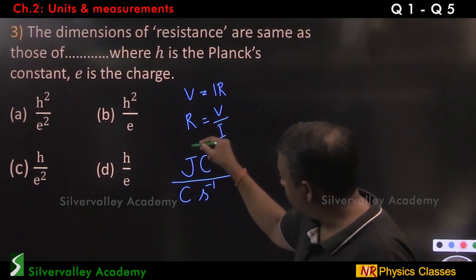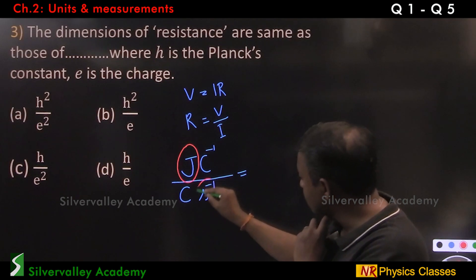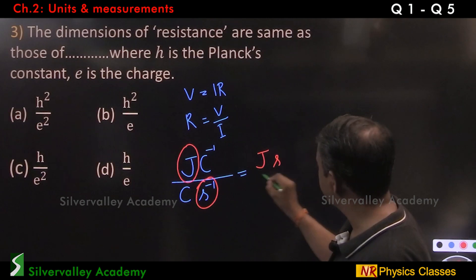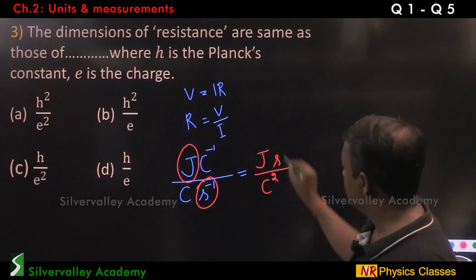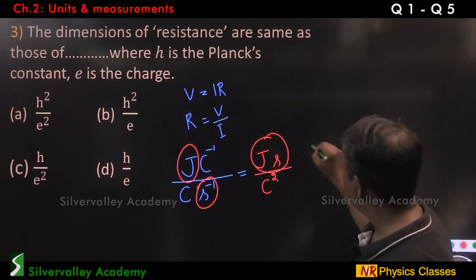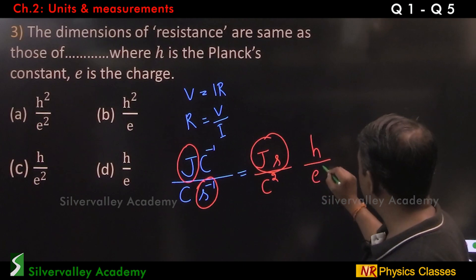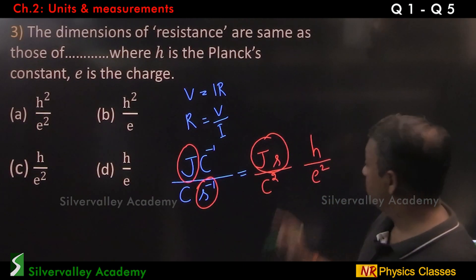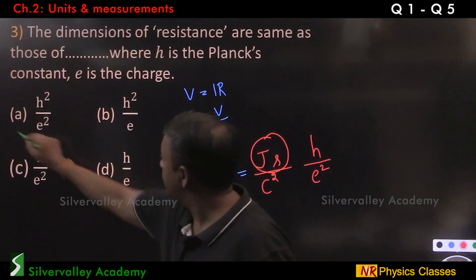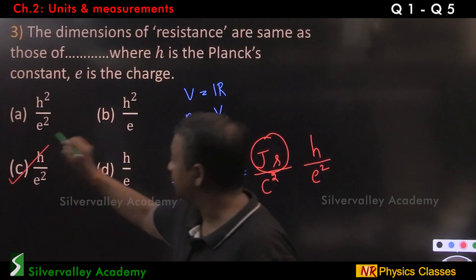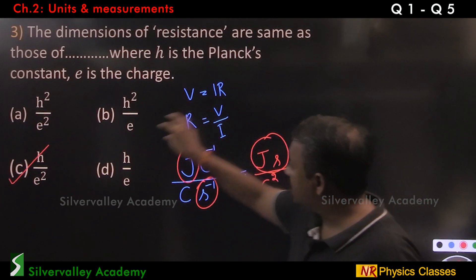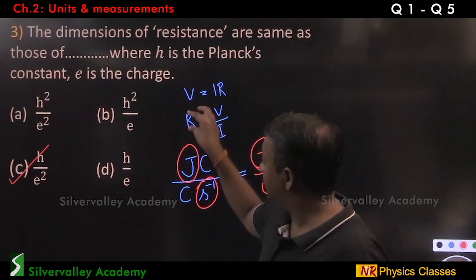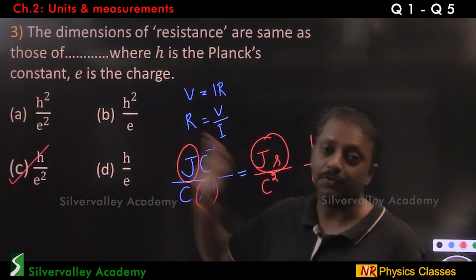Now, this Joule and there is per second. So, this per second goes to numerator becomes Joule second. And this Coulomb goes to denominator, it becomes Coulomb square. See, Joule second is Planck's constant. Coulomb square is charge square. So, it is H by E square. So, this resistance is not H by E square, but dimensional-wise, resistance is H by E square. That is the meaning of this question.